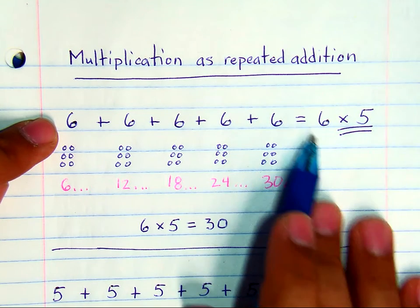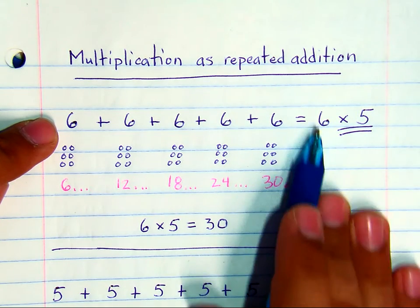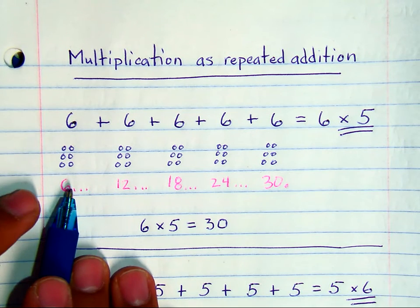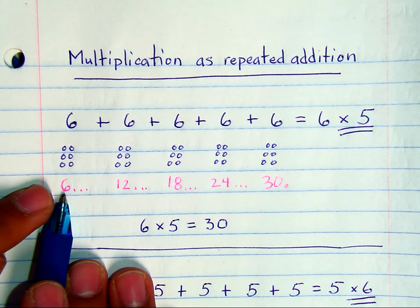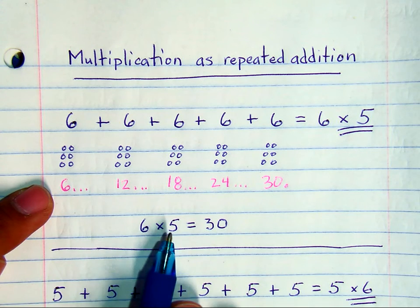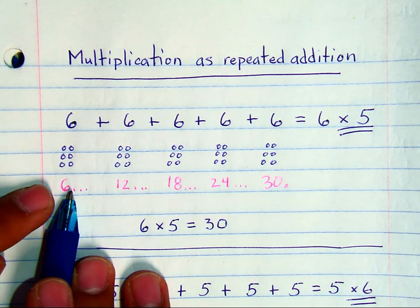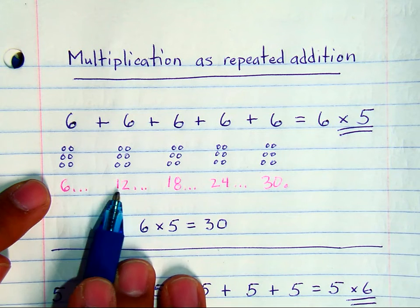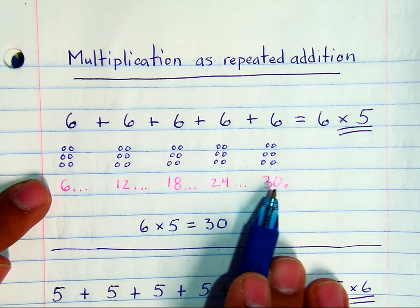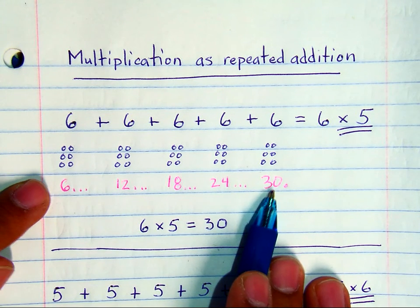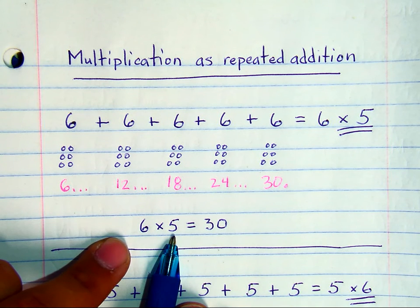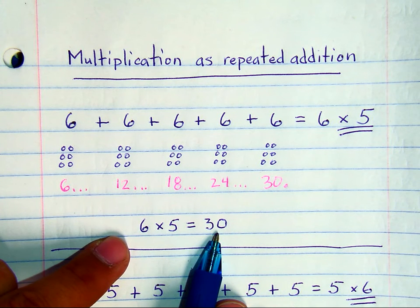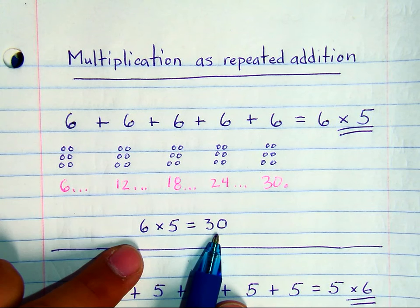This is the shortcut that students are going to be practicing. When you're counting 5 groups of 6, even though you're writing 6 times 5, you are doing a shortcut for 6, 12, 18, 24, 30. So 6 times 5 is 30. That's what we're going to be practicing now.